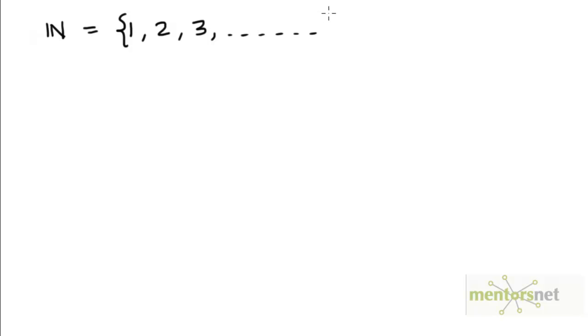In roster form, we would represent the set of natural numbers in this particular way. You can see here that this letter N comes from the first letter of natural numbers. It stands for this N over here.